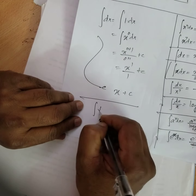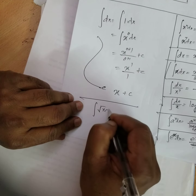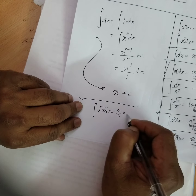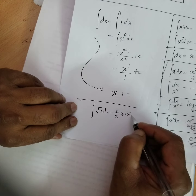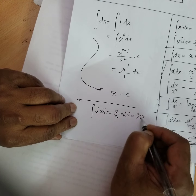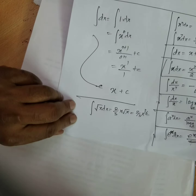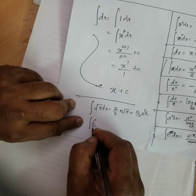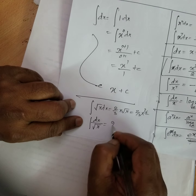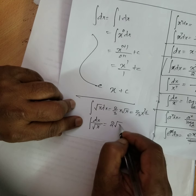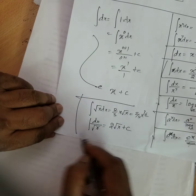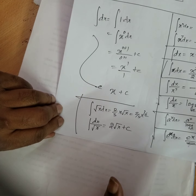Two more formulas: integration of root x dx equals 2 by 3 times x root x, or equivalently 2 by 3 times x to the power of 3 by 2. And integration of dx by root x equals 2 root x plus c.